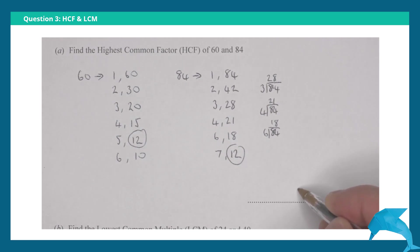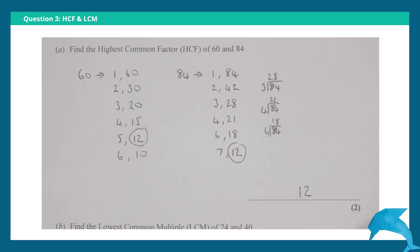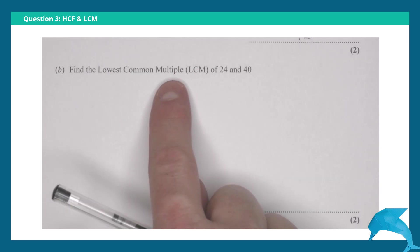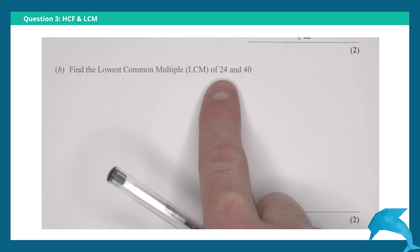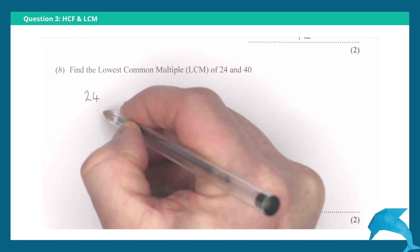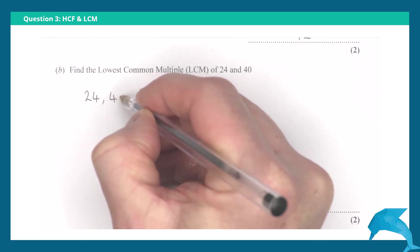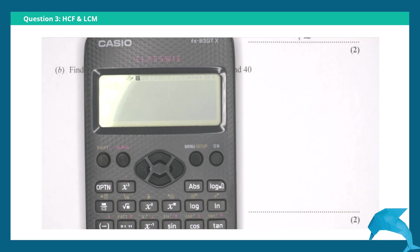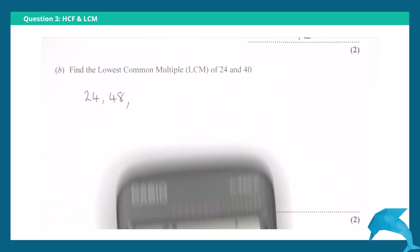Part b: Find the lowest common multiple (LCM) of 24 and 40. So the 24 times table: 24, 48, 48 plus another 24 is 72, plus 24 is 96.